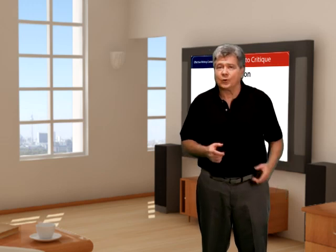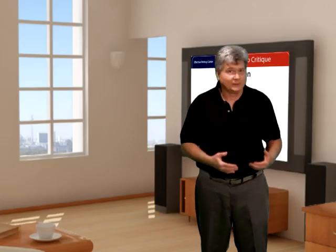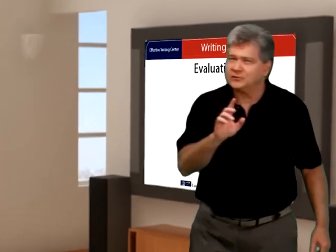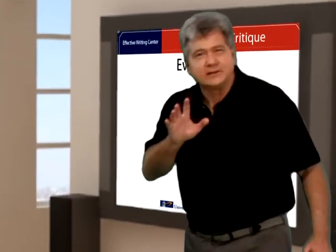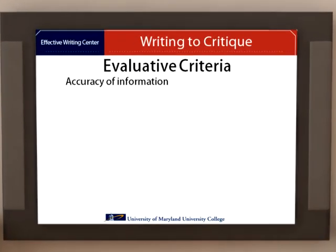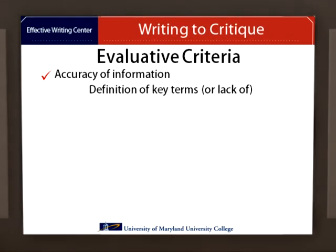Now, in our case — in the case of this text — you're going to be scoring not by mount and dismount, flexibility and strength, but rather by criteria such as accuracy of information and presence or lack of definition of key terms.